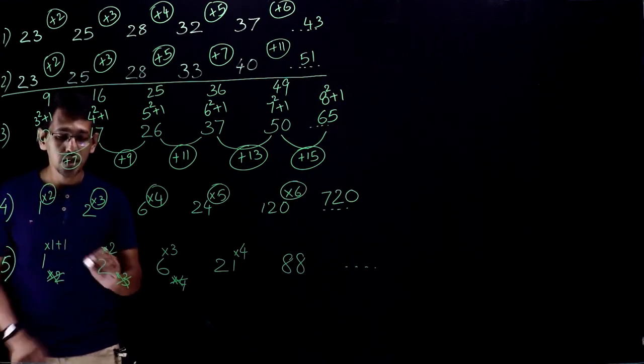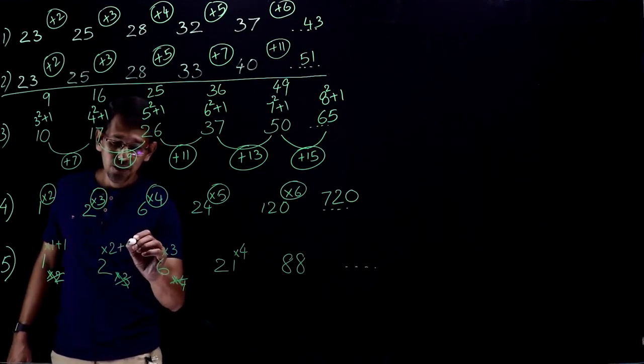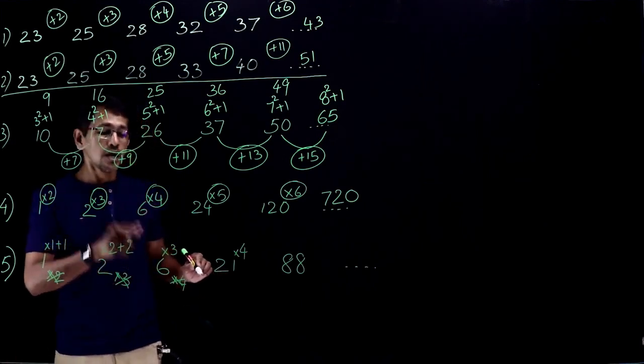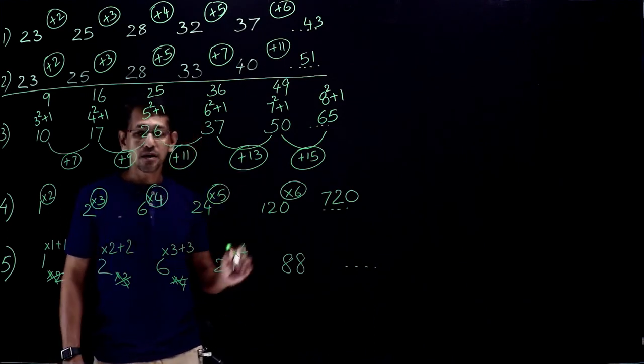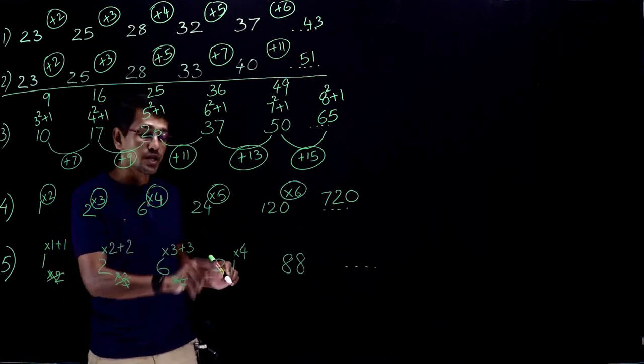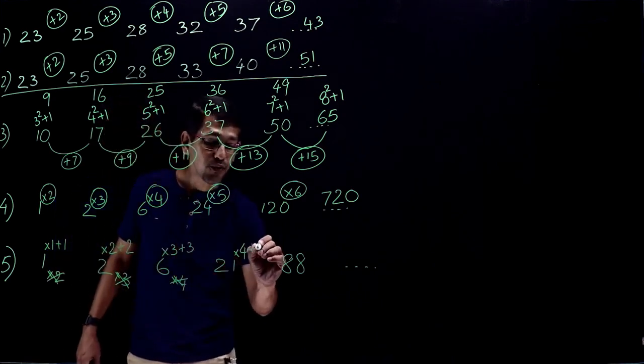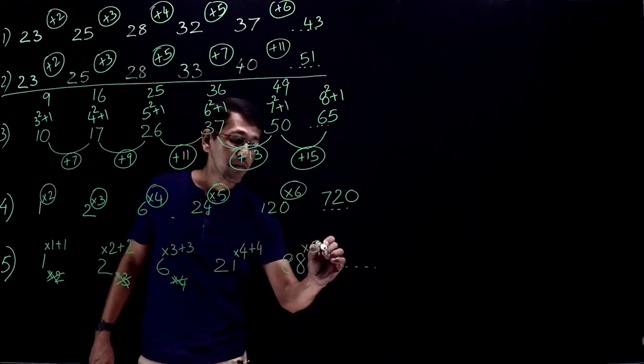So 1 into 1 plus 1 is 2. Now 2 into 2 is 4, 4 plus 2 is 6. 6 into 3 is 18, 18 plus 3 is 21. So look at the pattern. Into 1 plus 1, into 2 plus 2, into 3 plus 3, into 4 plus 4. And the answer must be 88 into 5 plus 5.